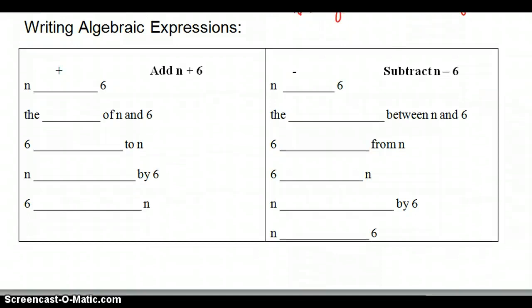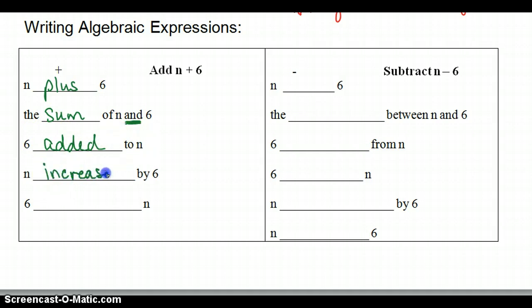We had an exercise early in the year about all the words that would mean add. Let's run through some that you're going to hear a lot when you're trying to write an algebraic expression from words. N plus 6 is an obvious add. The sum of N and 6, so the word and means sum, which means add. 6 added to N, N increased by 6, 6 more than N. All of those are telling us to add.